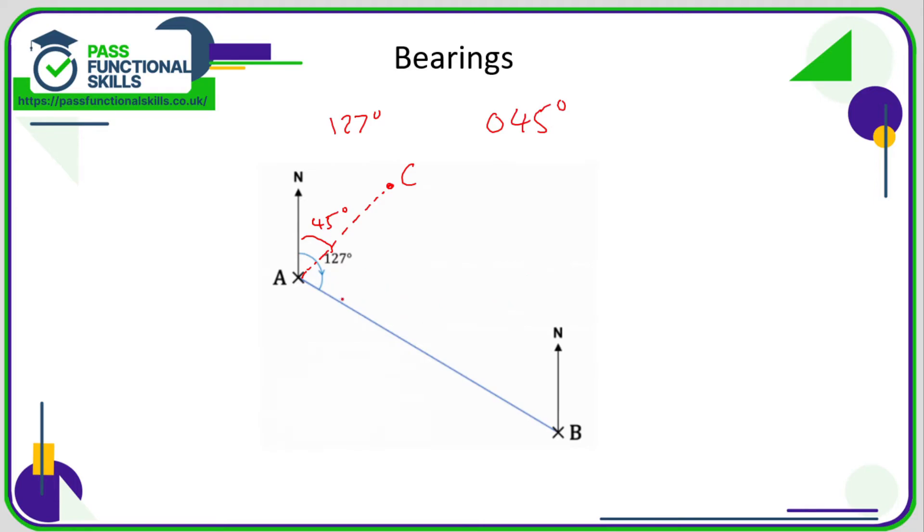So what you need to be careful about as well as the wording, it can be a bit confusing, is this angle here is the bearing of B from A. So if you're at A, what bearing do you go on to get to B? So you'd need to turn 127 degrees from north to get to B.